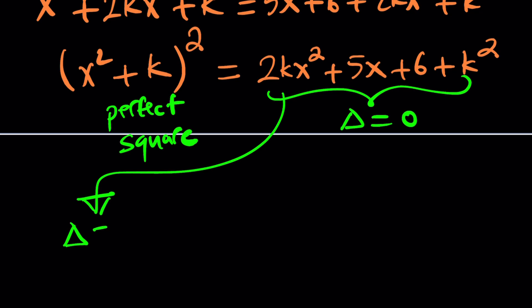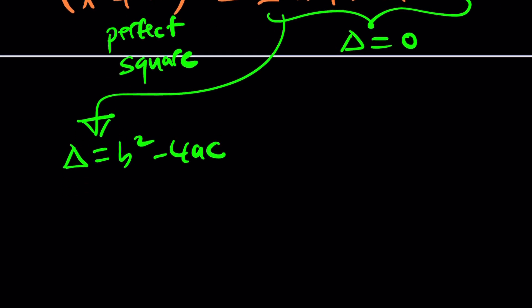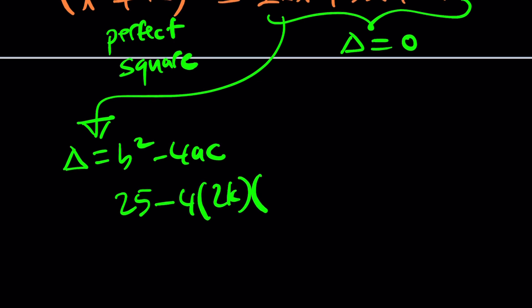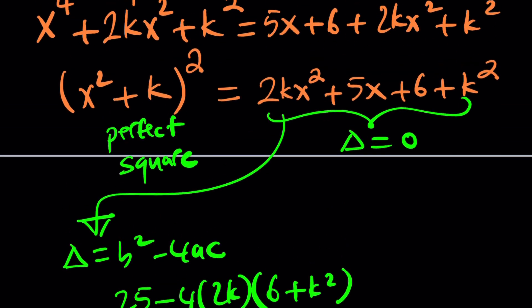What is delta? Formula is b squared minus 4ac. Don't forget that. b is 5, so it's going to be 25, minus 4 times a, which is 2k, times c, which is 6 plus k squared. Be careful, because k is considered a constant, so 6 plus k squared is our constant in this case. Make sense? Great.